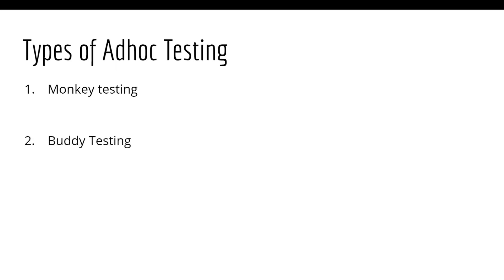Second is buddy testing. Buddy testing is a type of testing in which a developer and a tester work together to test the application, thus improving the testing process with the developer's internal architecture knowledge and the testing mindset of the tester. Third is pair testing. In the case of pair testing, two testers work together to perform testing with wider and better test coverage. One tester can perform testing and the other tester can observe and analyze the testing process.